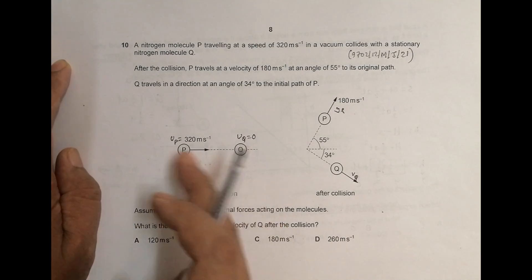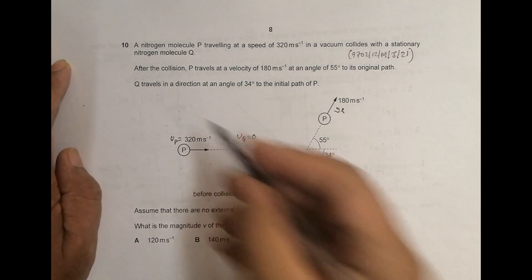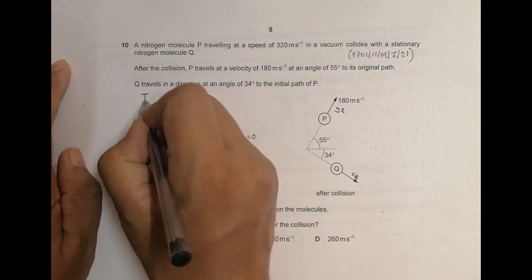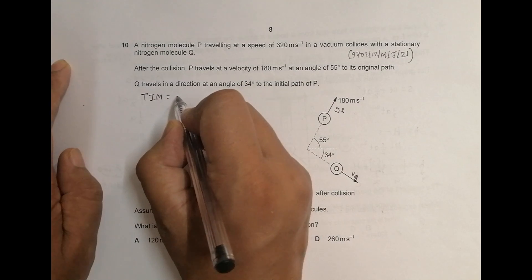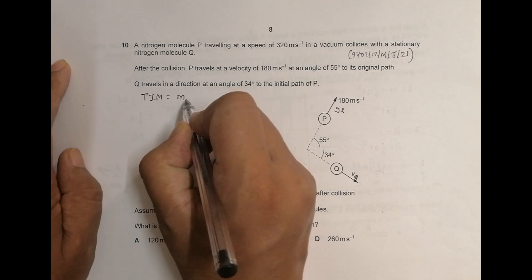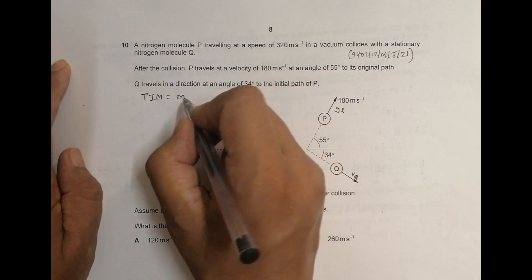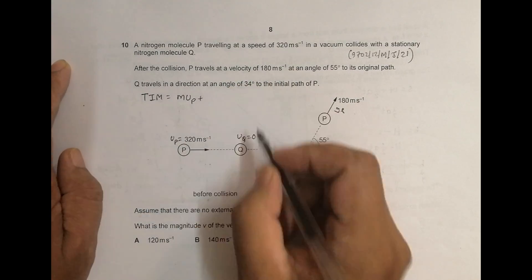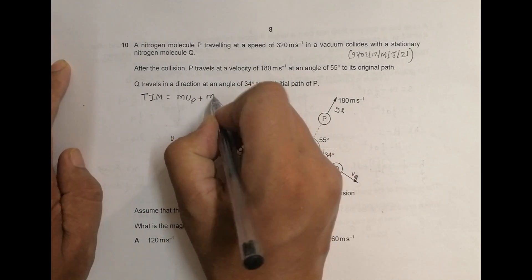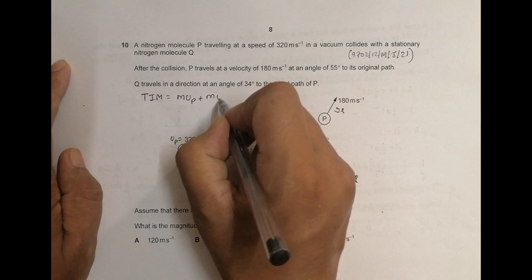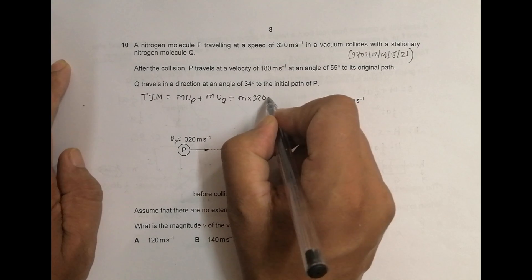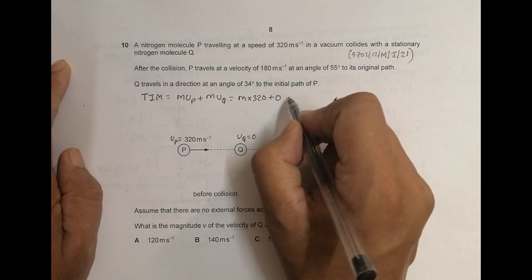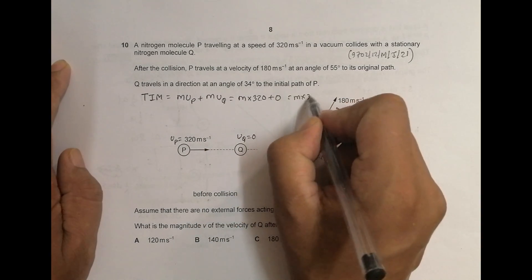Now the total initial momentum before the collision is equal to momentum of this thing. So it is mass M into U P plus mass M into U Q equal to mass M, U P is 320 plus it is 0 and simply it is M into 320.